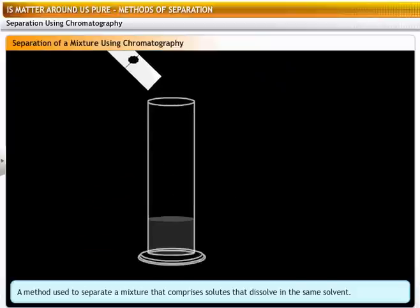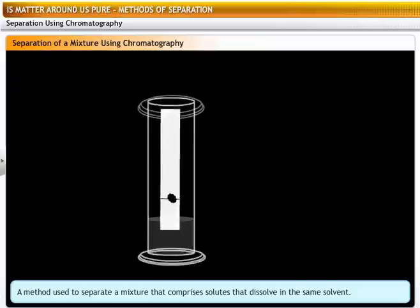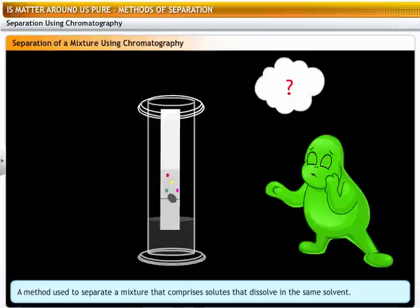Finally, lower the filter paper into a jar containing water so that the drop of ink on the paper is just above the water level. Don't disturb the jar. You will see that the water rises up the filter paper. But why are there different colored spots on the paper strip?